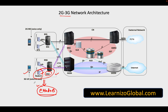When it comes to the circuit core network, there is absolutely no circuit core network in the 4G network. Functionality like MSC and GMSC will not play any important role in the 4G network architecture. We have moved to a complete packet core network, and that's where we have components like SGSN and GGSN.